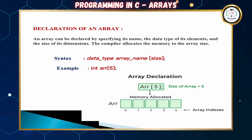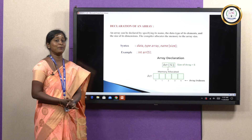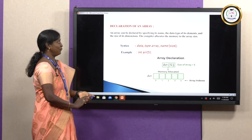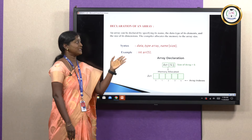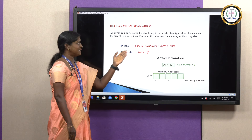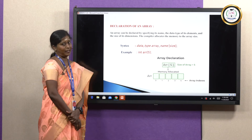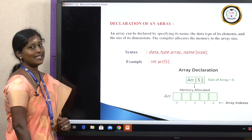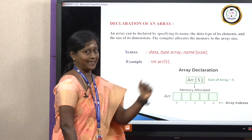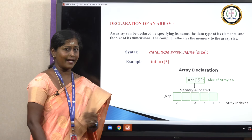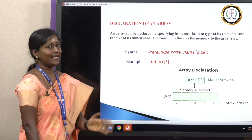Next is array declaration. Multiple data elements of similar data type are stored in a single variable. An array is declared by specifying its name, its data type, and the size. The syntax is: data_type array_name[size]. The data type can be int, char, float, or any data type.